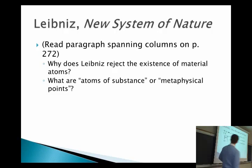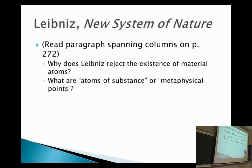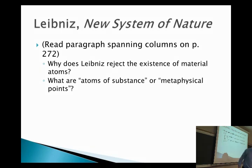At the end of last class, I was trying to rush through this reading of the new system of nature, and we are just kind of getting some of the basics of what Leibniz's philosophy includes. We already went over this, but I thought it would be good to start with this question to reorient us into thinking about Leibniz. Leibniz does not believe that there are what we would call material atoms. Does anybody remember one of the reasons he gives for rejecting the existence of material atoms?